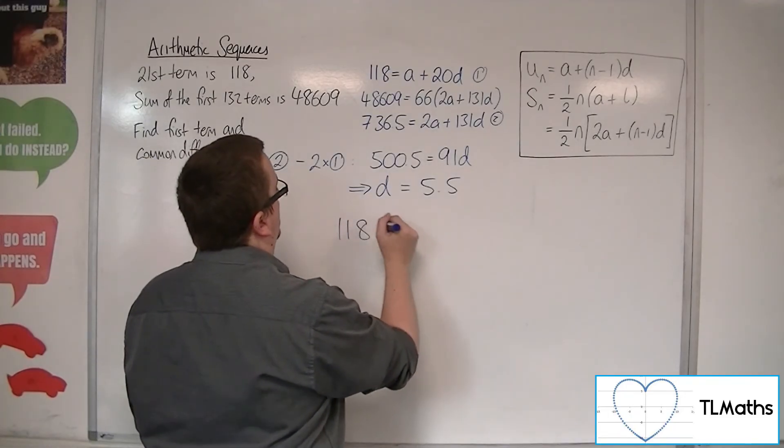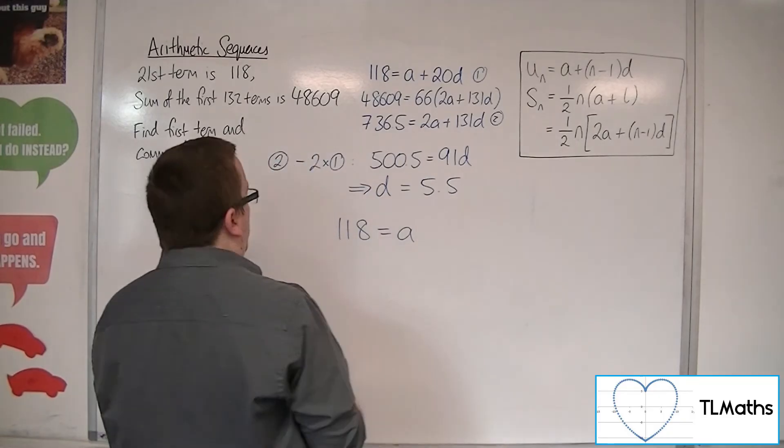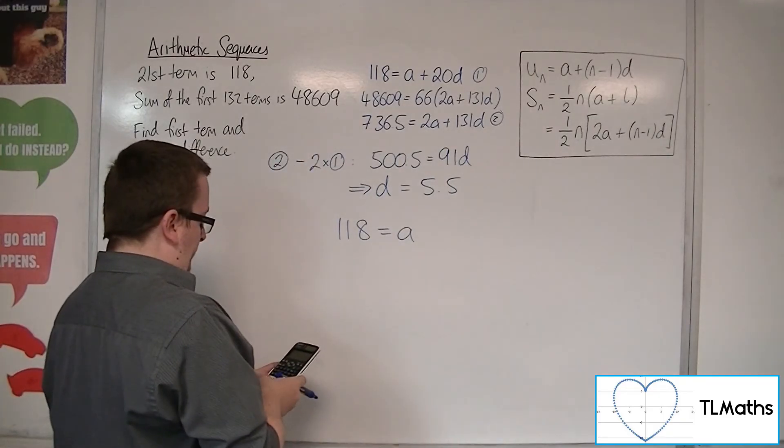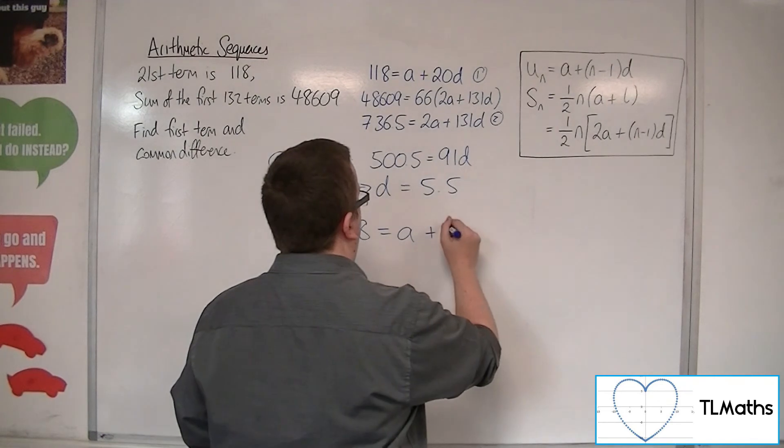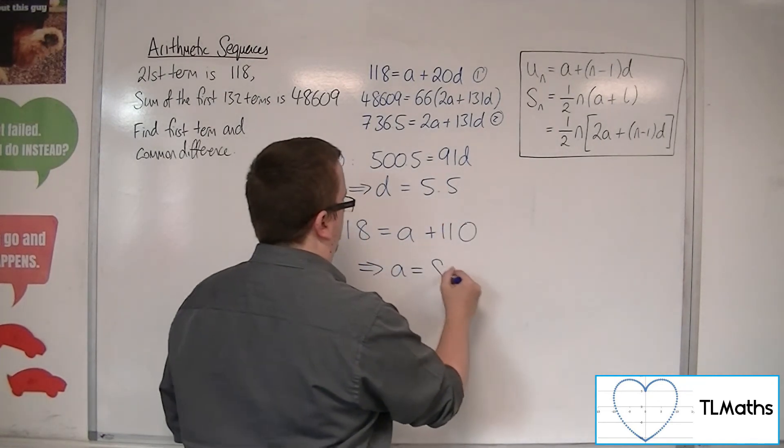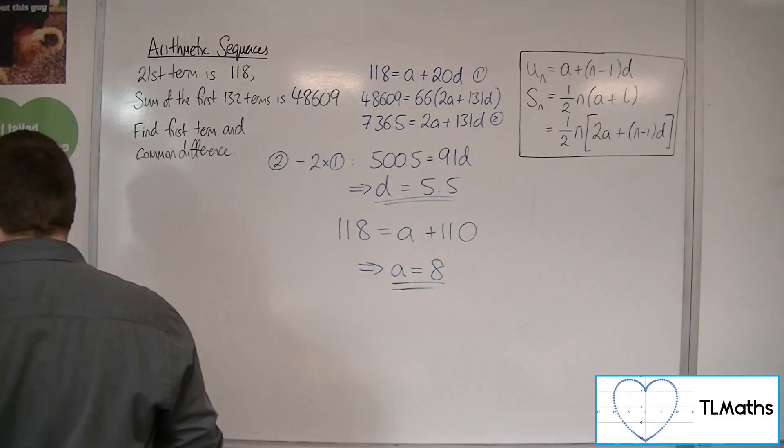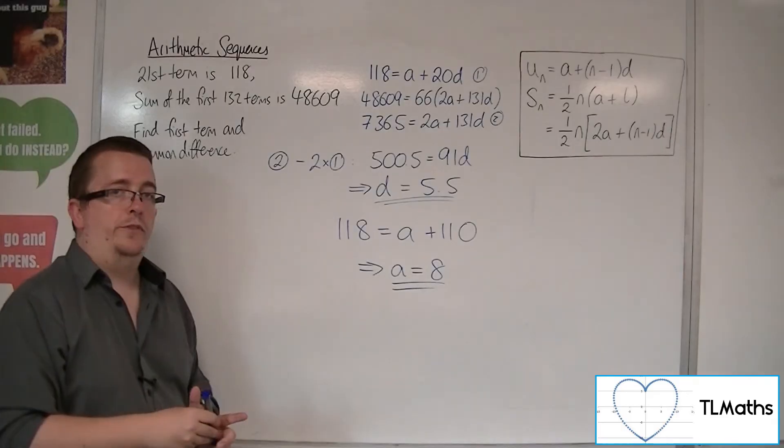So I'm going to substitute it into equation 1. So 118 is equal to A plus 20 lots of 5.5, which is 110. And so A must be 8. So there's my first term and common difference. Let's go.